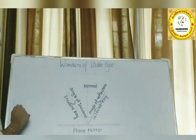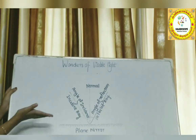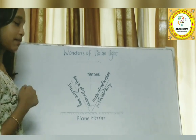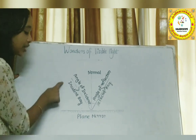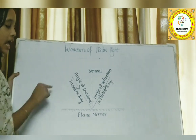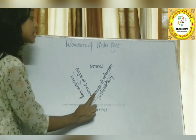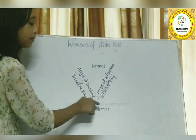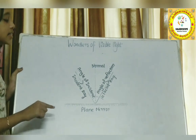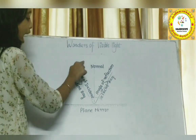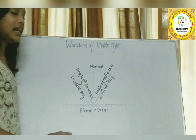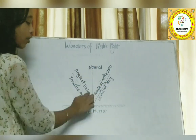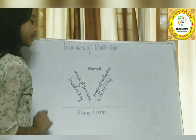Look at this figure — it is based on the experiment we saw, about regular reflection. The ray falling on the mirror is called the incident ray. The ray reflected from the mirror is called the reflected ray. The line perpendicular to the mirror is called the normal. The angle between the incident ray and the normal is called the angle of incidence, and the angle between the reflected ray and the normal is called the angle of reflection.